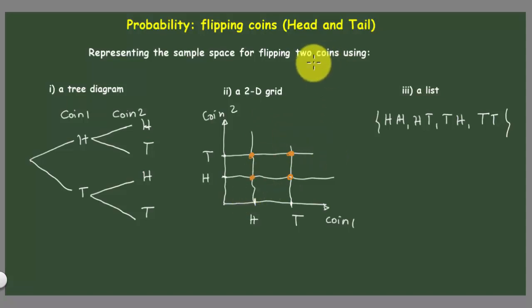When you flip two coins or even three, you can represent it using a tree diagram, a two-dimensional grid, or a list. In the next video we're going to do a couple of examples about it.